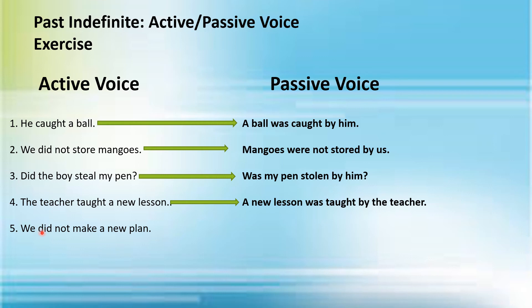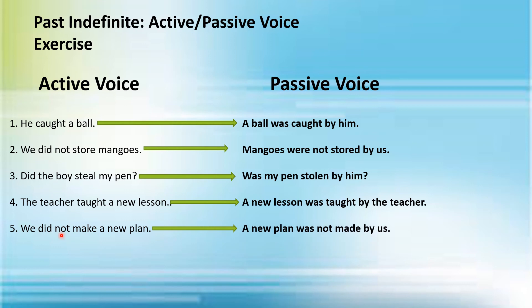See the fifth sentence: 'We did not make a new plan.' You take 'a new plan' to the start of the sentence. 'Did not' shows this is the negative sentence of past indefinite tense. Your passive voice sentence would look like this: 'A new plan was not made by us.'